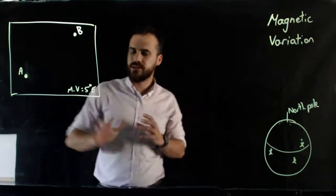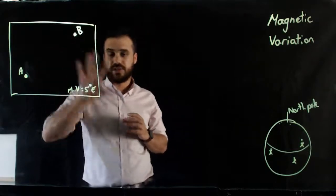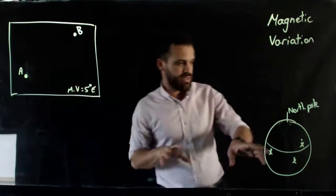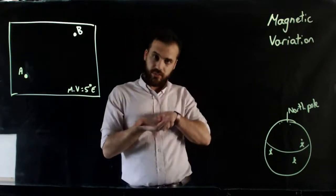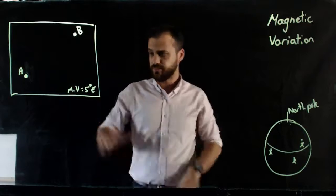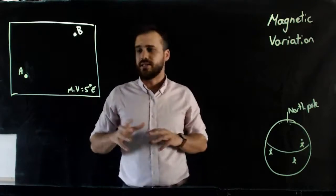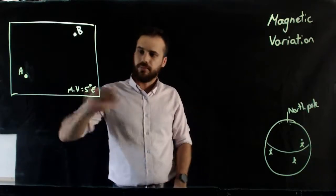So that means that if you're hanging out in this particular part of the world, maybe it's here, it means that your compass, the thing you look at, which is supposed to point to the north, is going to be out. It's going to be out, it's going to be wrong by 5 degrees.